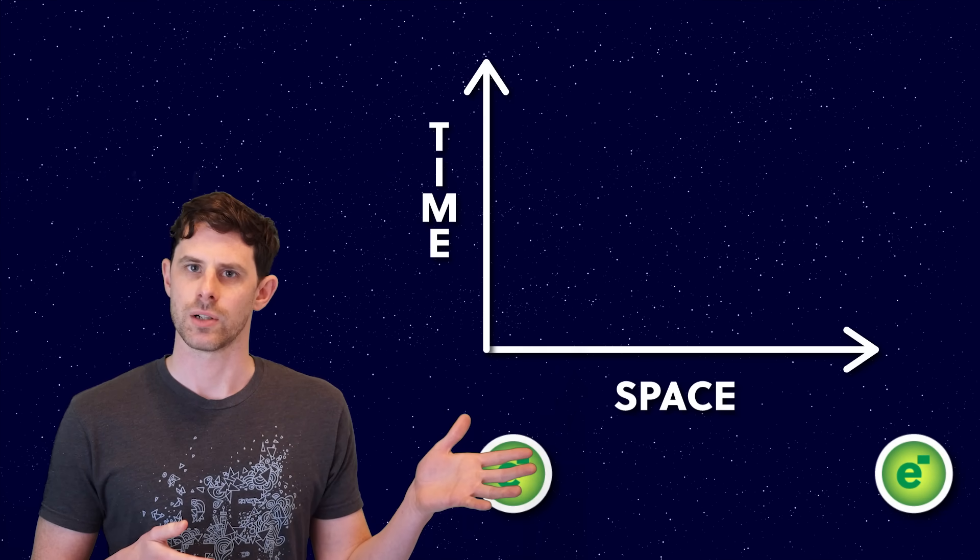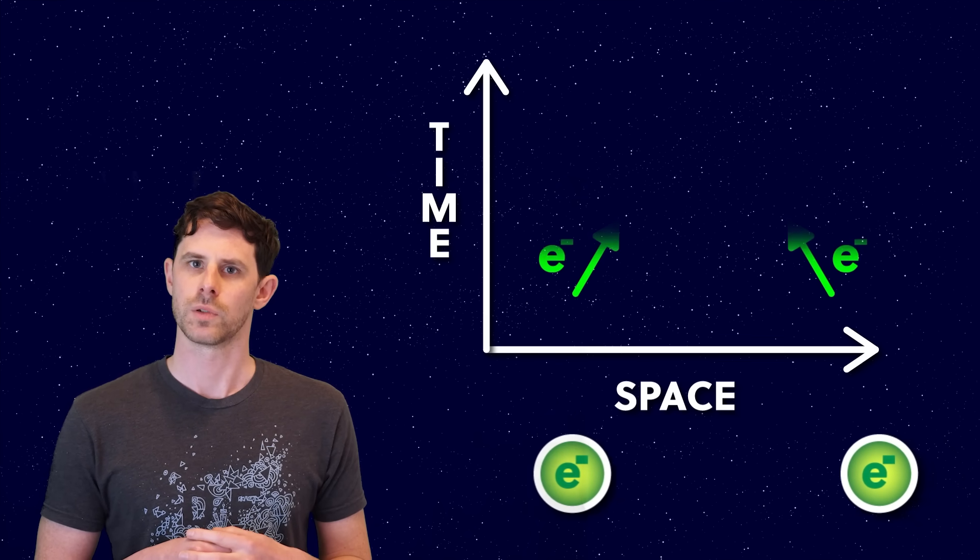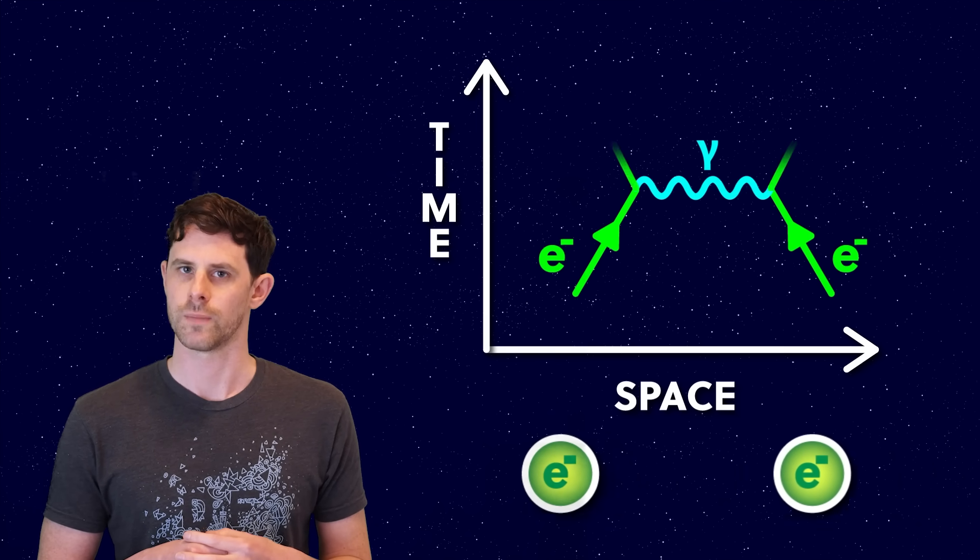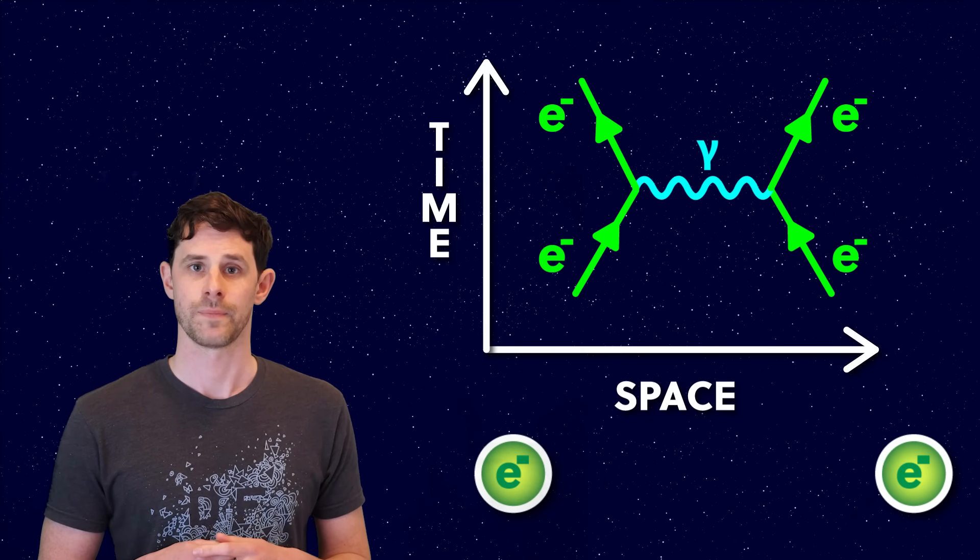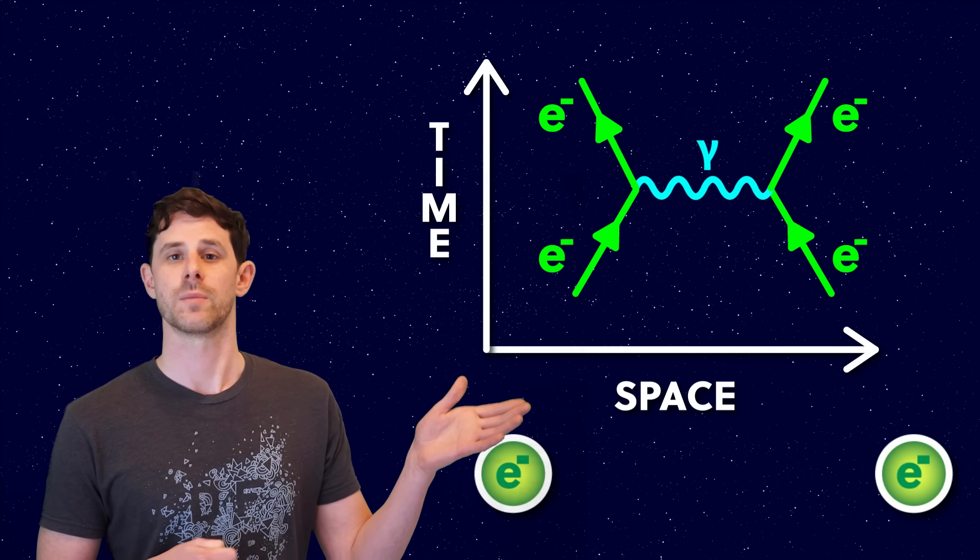Here's an example, with a little animation to go with it. Two electrons move towards each other, exchange a photon, and then move away from each other again. And that's what this looks like as a Feynman diagram.